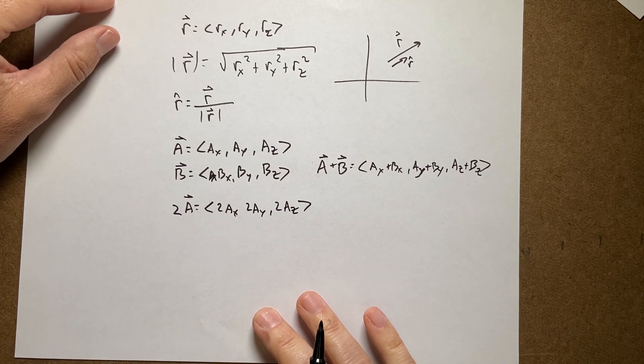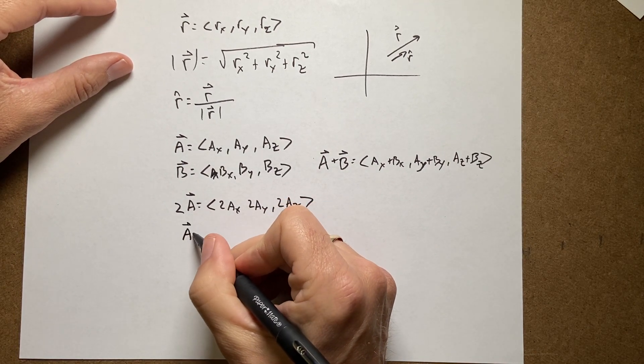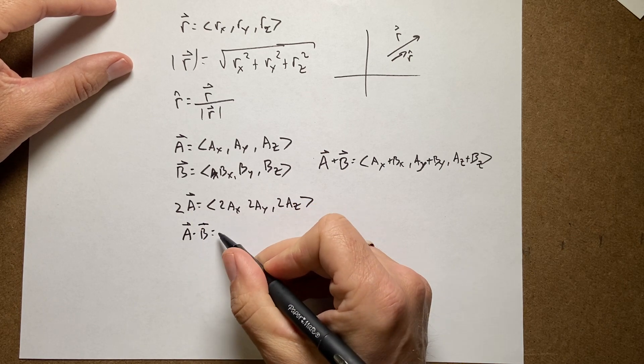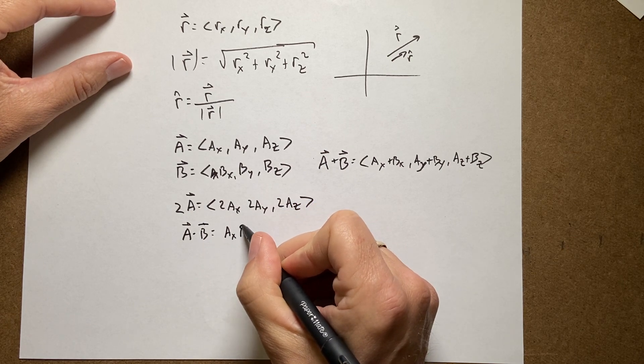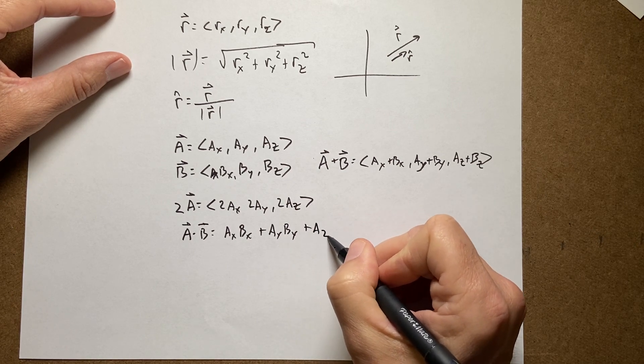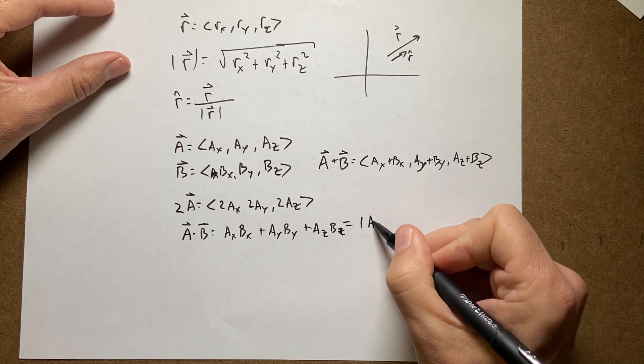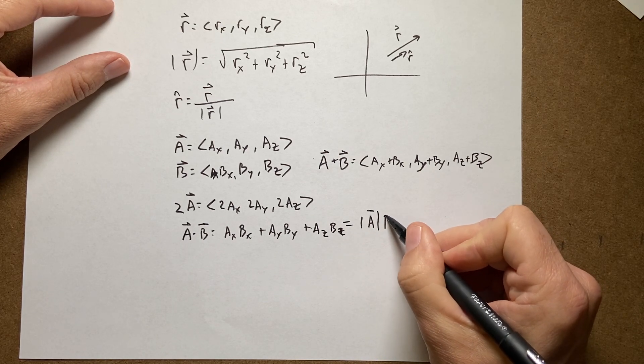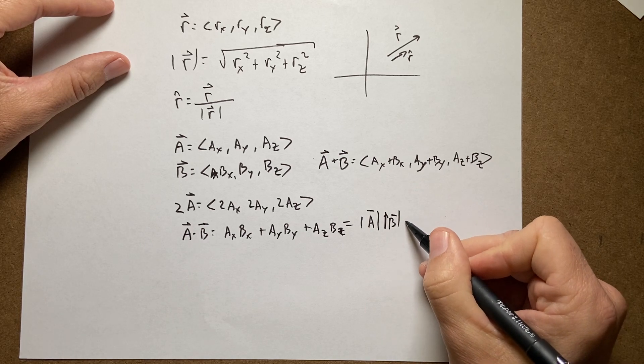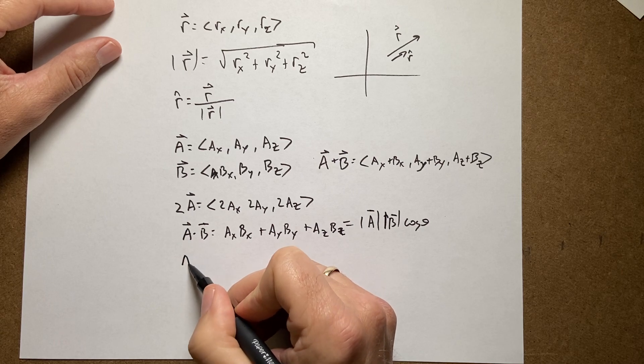What if I want to multiply two vectors? You can't. But there is the dot product, a dot b is going to be equal to ax bx plus ay by plus az bz. And this is also equal to the magnitude of a times the magnitude of b times the cosine of the angle between them.